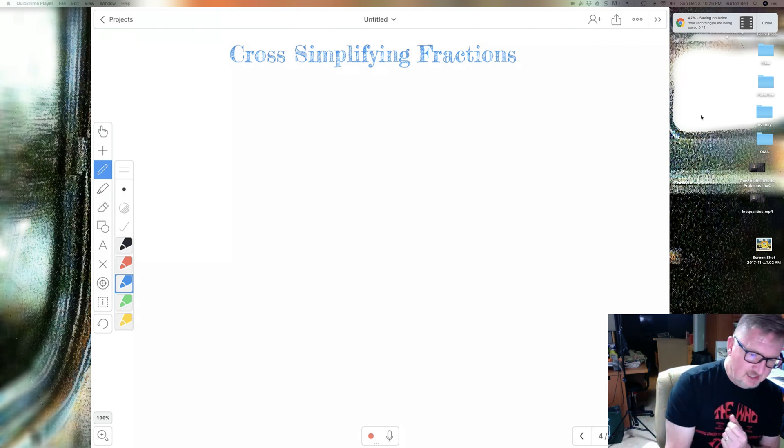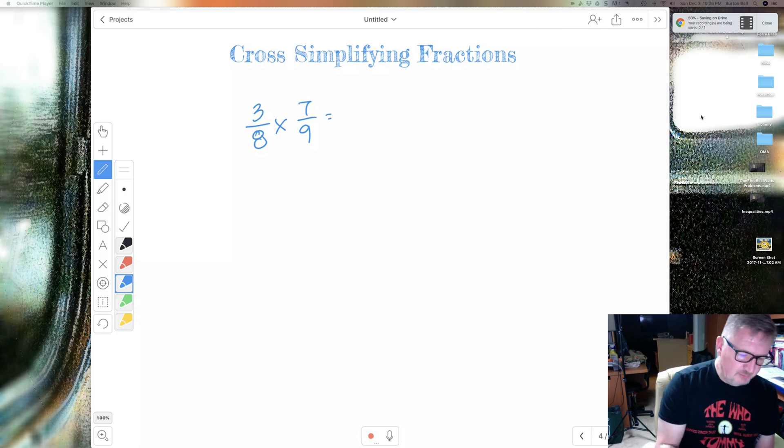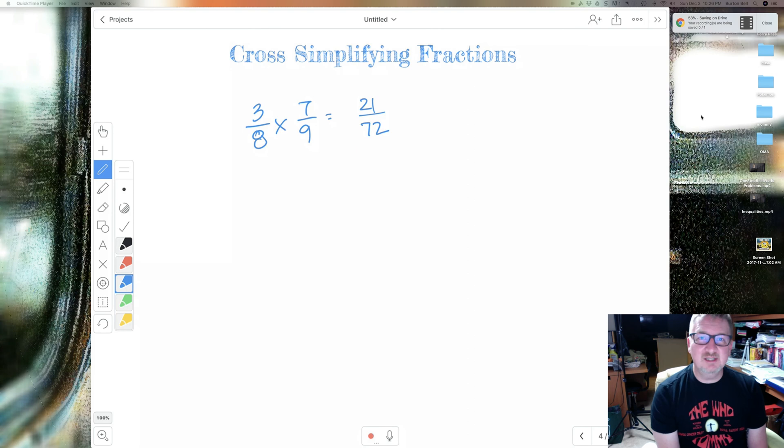So let's go ahead and get started. Say I am multiplying 3 over 8 times 7 over 9. And if I were to multiply these two fractions together, I'd say 3 times 7 is 21, 8 times 9 is 72. And then I've got to think to myself, wow, I've got 21 and 72. How do I simplify that?